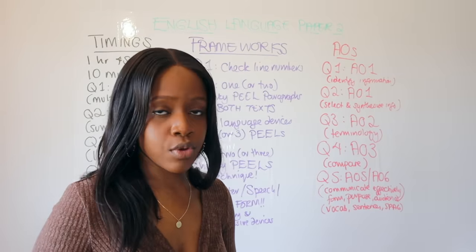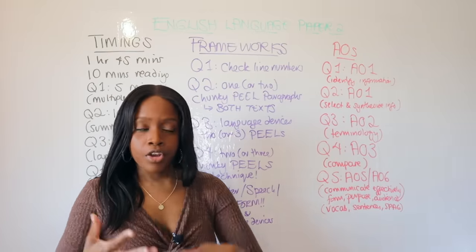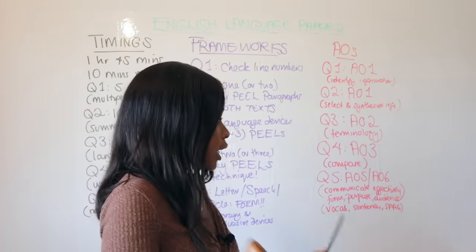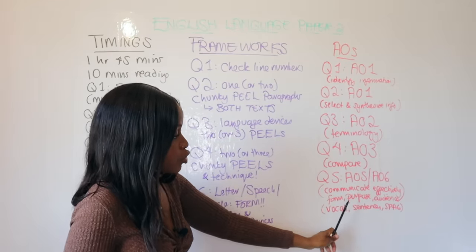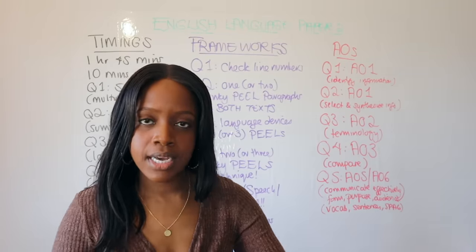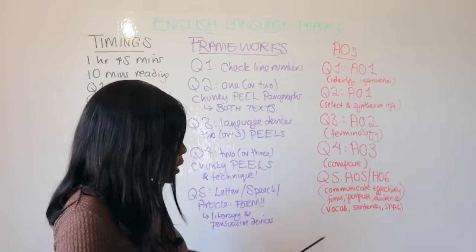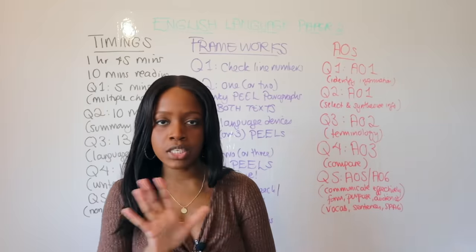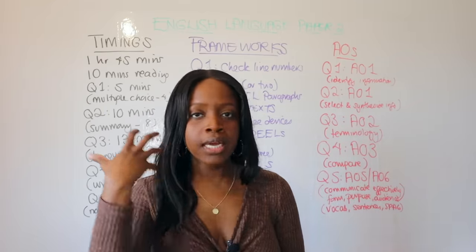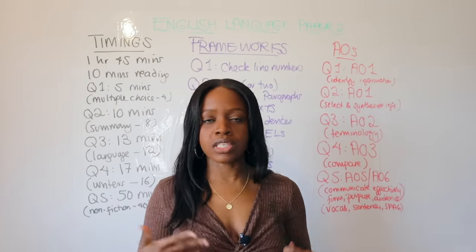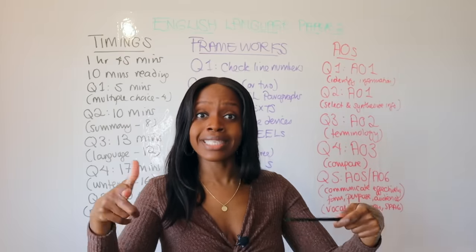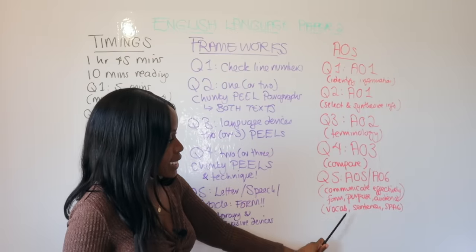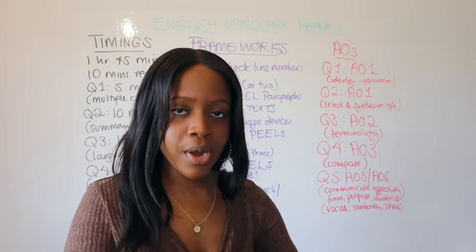Question Five tests AO5 and AO6. AO5 asks: can you communicate effectively and persuasively, presenting your perspective with statistics and anecdotes, while also demonstrating awareness of form, purpose, and audience? Form means showing whether it's a letter, speech, or article. Purpose: your primary purpose is to inform, secondary is to entertain. Audience: write formally — use titles like 'Sir', 'Madam', or 'MP', and end a letter with your full name, for example 'Kind regards, Barbara Jow'.